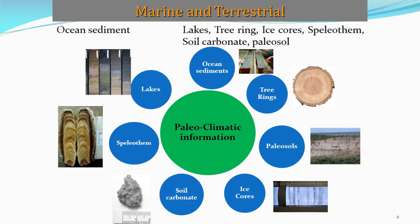These proxies are basically ocean sediments, tree rings, paleosol, ice core, soil carbonate nodules, speleothem, and lake sediments. Mud and sand deposited at the bottom of the lake provide annual information regarding lake level fluctuation.